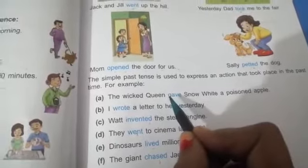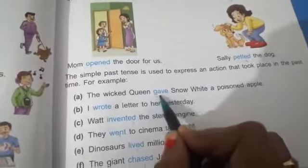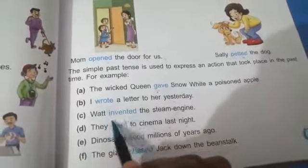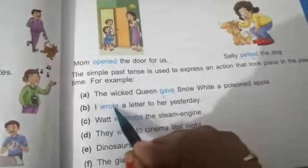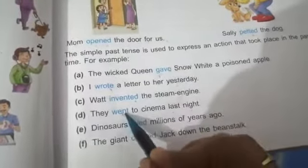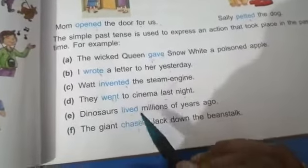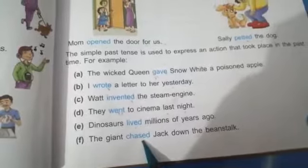Here, the words which are in blue color, these all are the past form. Gave is the past form of give. Wrote is the past form of write. Invented is the past form of invent. Again, went is the past form of go. Lived is the past form of leave, and chased is the past form of chase.